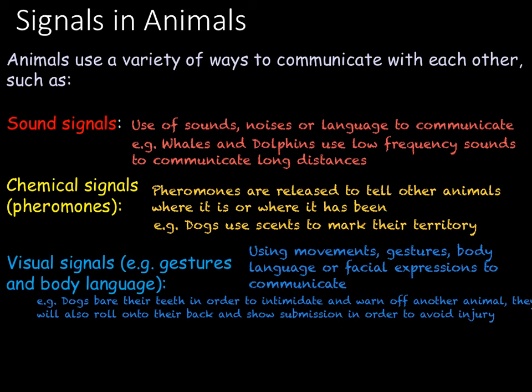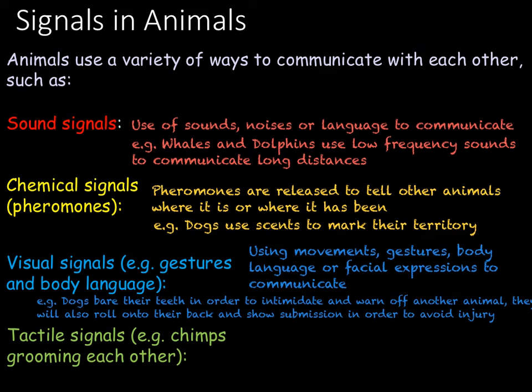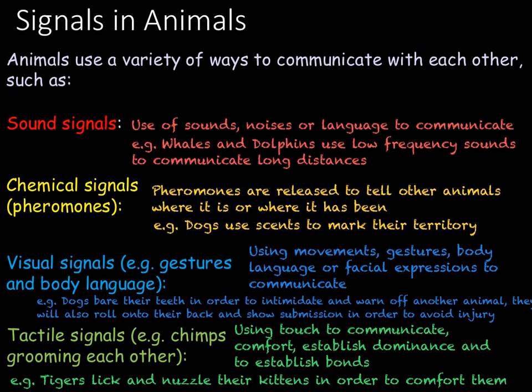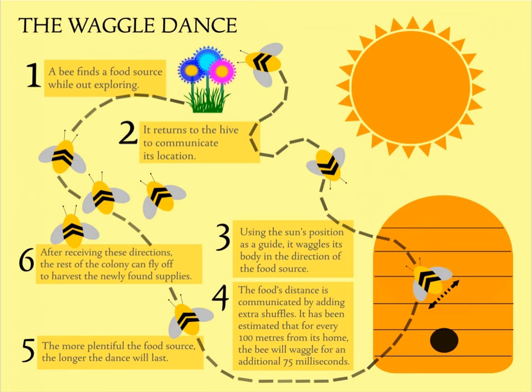The final type of communication you need to know about are tactile signals. Tactile communication is when you communicate via touch, and lots of animals use this. For example, chimps will groom each other, tigers will lick and nuzzle their kittens, and bear cubs will wrestle with each other. Touch is used to comfort, to establish dominance, and to establish bonds within a group.